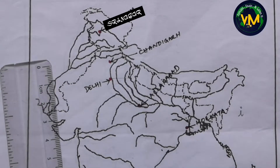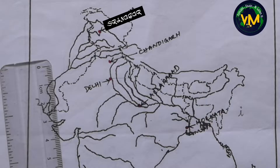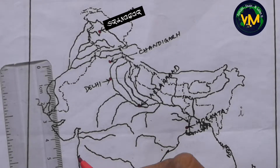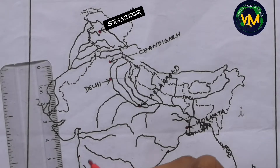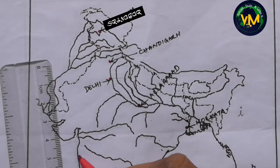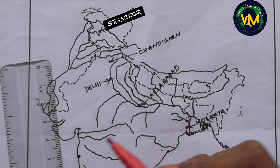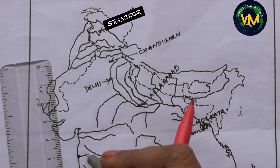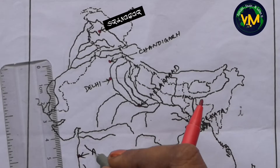One more major city is Mumbai. For Mumbai it's very easy — on the west coast you already see a black dot, and that black dot is Mumbai. You don't have to do anything; it's already there.